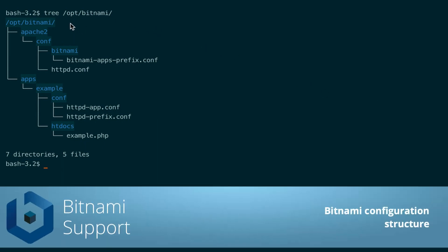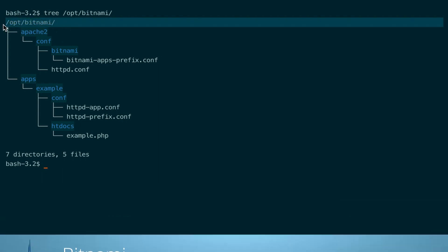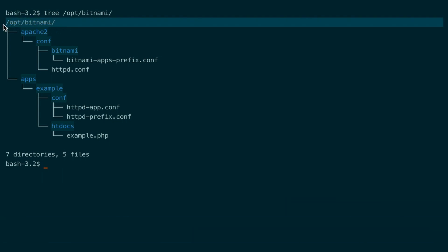For Bitnami Cloud Images, the installation directory is opt-bitnami. The folder where the main Apache configuration files are placed is opt-bitnami-apache2-conf.